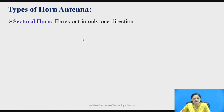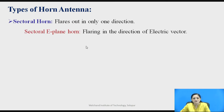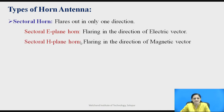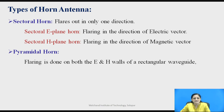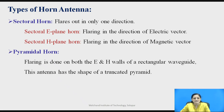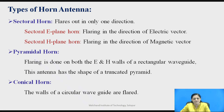The sectoral horn antenna is flared out in only one direction, and is divided into two types: sectoral E-plane horn and sectoral H-plane horn. In the sectoral E-plane horn, the flaring is in the direction of the electric vector — that is, the flaring is provided parallel to the electric field. In the sectoral H-plane horn, the flaring is in the direction of the magnetic vector. The pyramidal horn is defined as one in which flaring is done on both the E and H walls of the rectangular waveguide, and its shape is like a truncated pyramid. In the conical horn antenna, the walls of a circular waveguide are flared out.